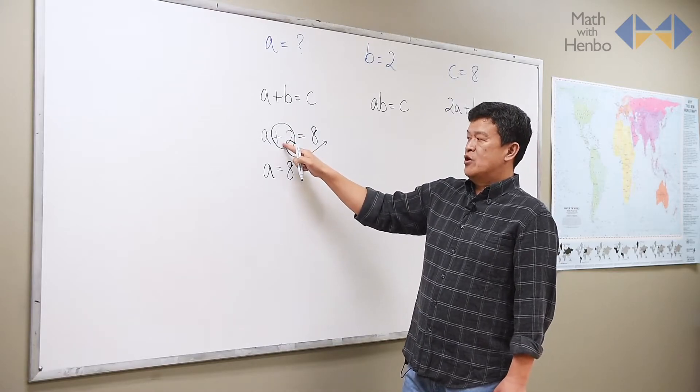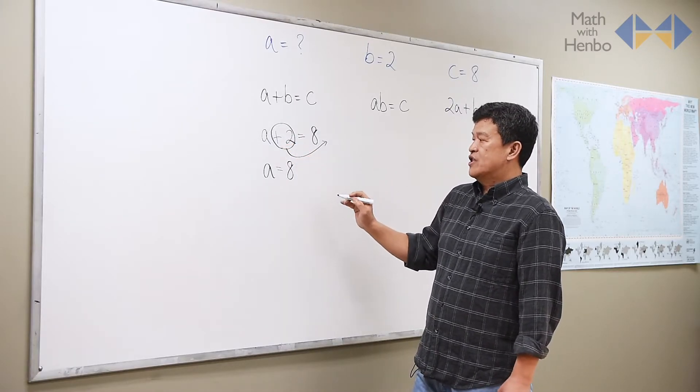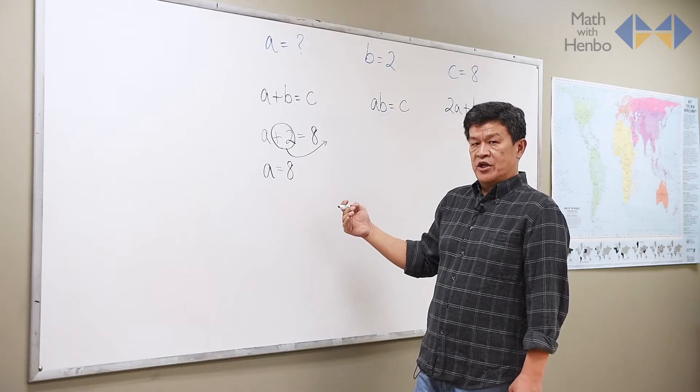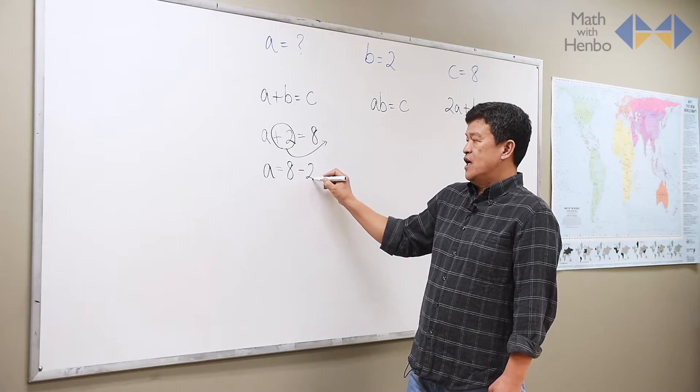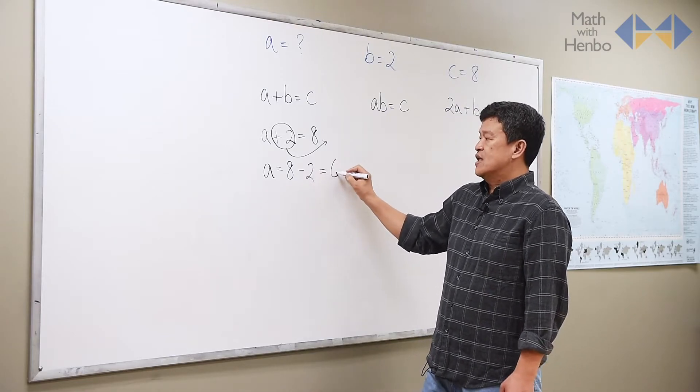The number you take across to the other side becomes its opposite operation. So if it's an addition, it becomes a subtraction. Nothing else. So in this case, 8 minus 2 gives us 6.